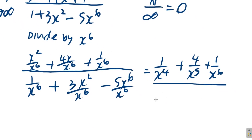1 over x to the 6 plus 3 over x to the 4 minus... Well, x to the 6 over x to the 6 is 1, so it's just minus 5.